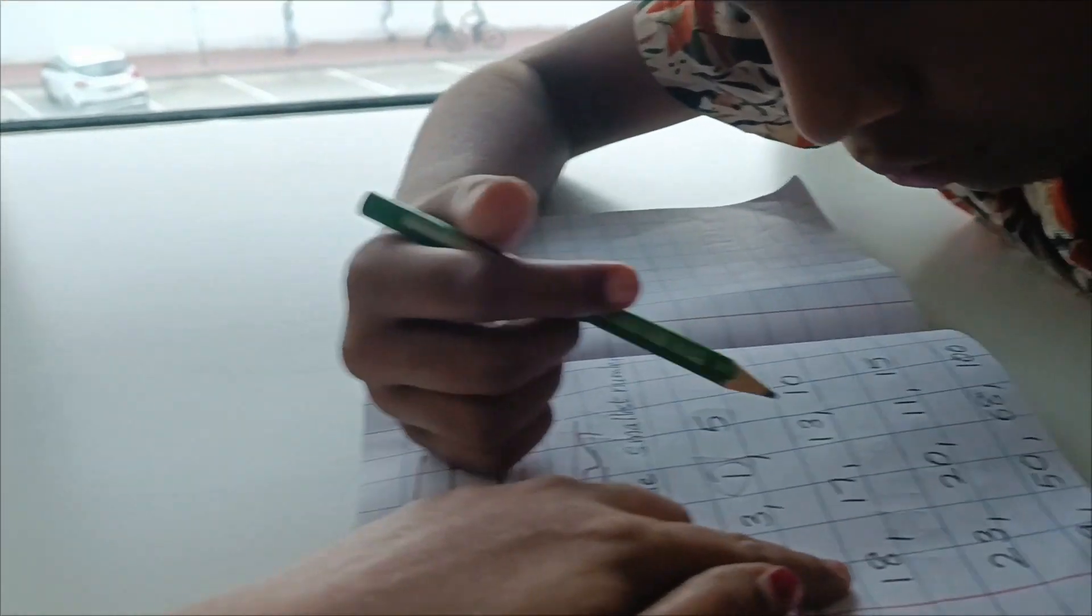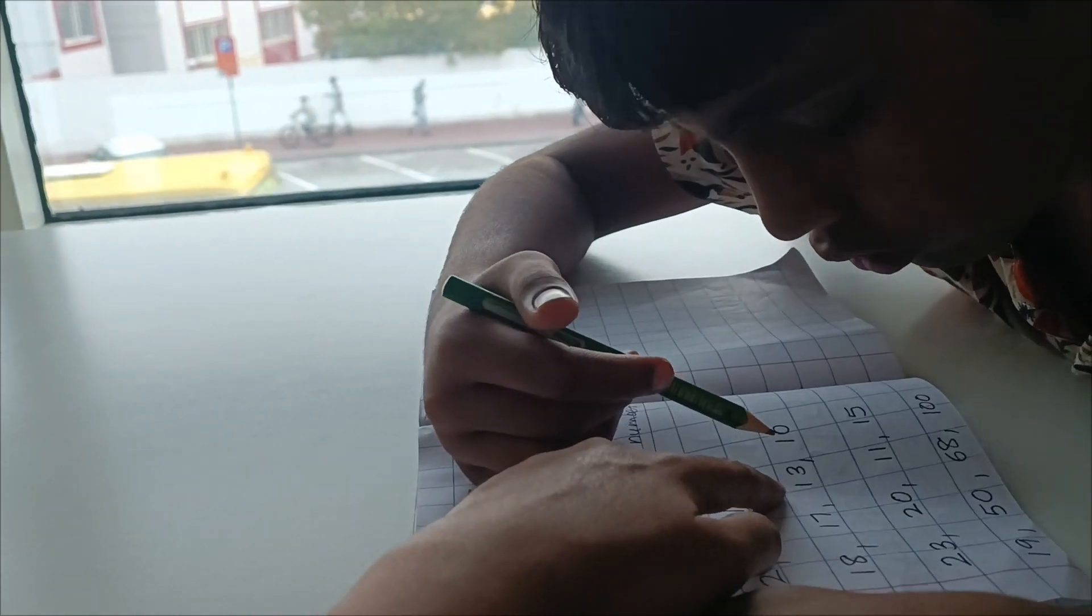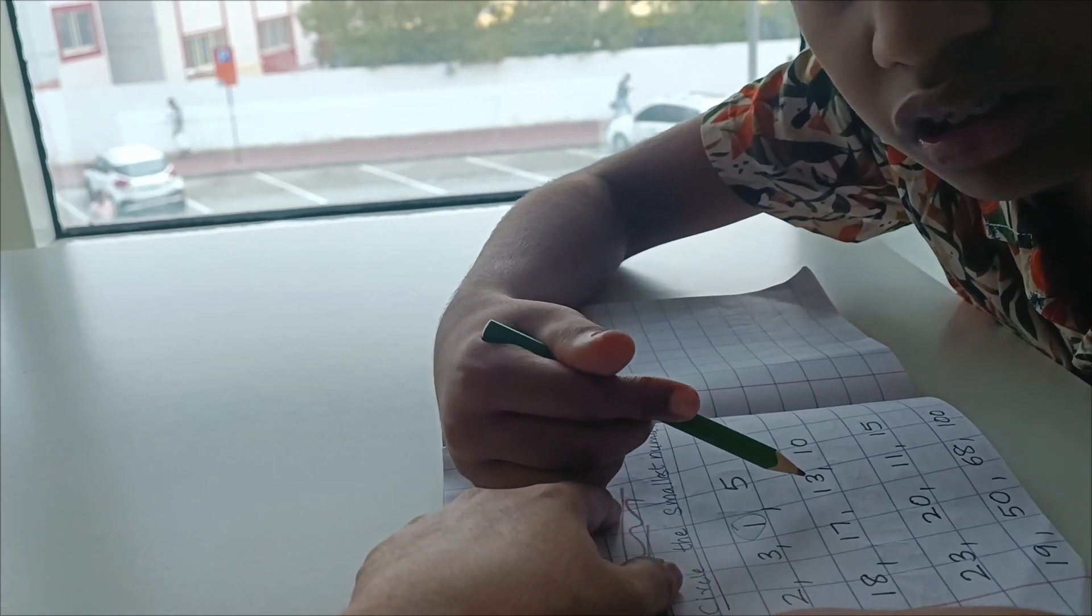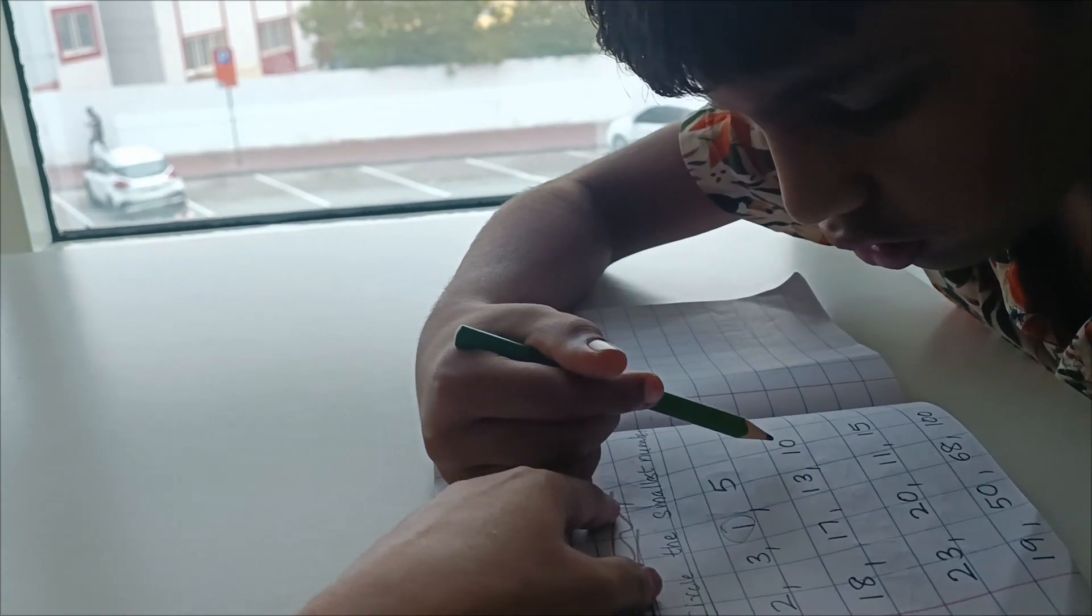In the next group. 18, 17, 13, 10. Which is the smallest? 10. Yes. 13. 13 or 10. Which is smaller? 10.